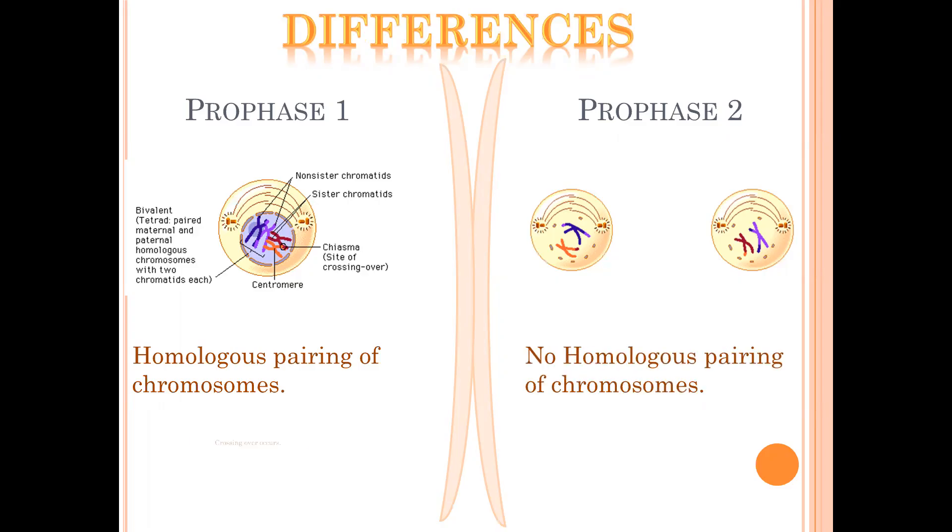Also in prophase I, the process of crossing over occurs, whereas in prophase II no crossing over occurs. And if we look, we'll notice that in prophase I you have the diploid number of chromosomes, whereas in prophase II it has the haploid number of chromosomes.